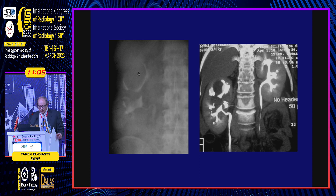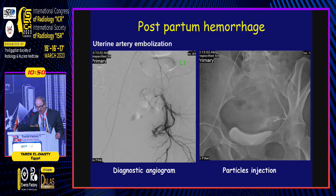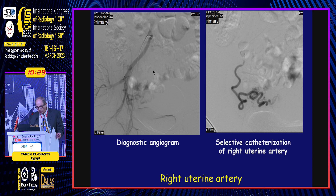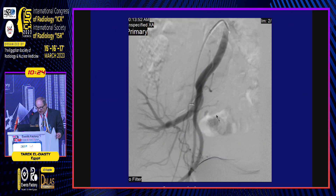On intravenous urography before embolization, the mass effect is visible, and on CT urography after embolization there is very significant reduction with preservation of excretory function. For postpartum hemorrhage, diagnostic angiography shows the uterine arteries. We embolize the right uterine artery — after delivery of the particles, there is no further filling — then go to the right side and embolize the right uterine artery, with no further filling of the uterine vessel after embolization.